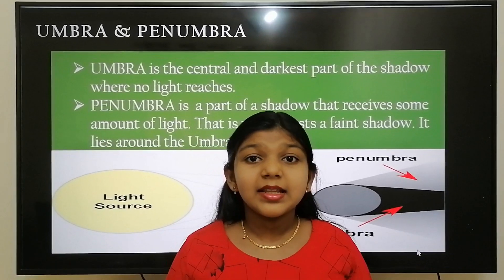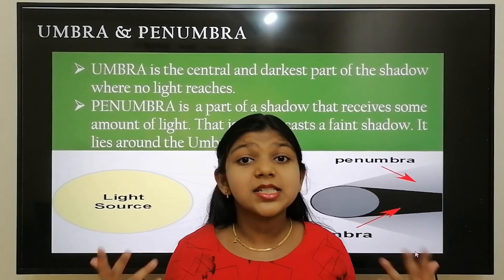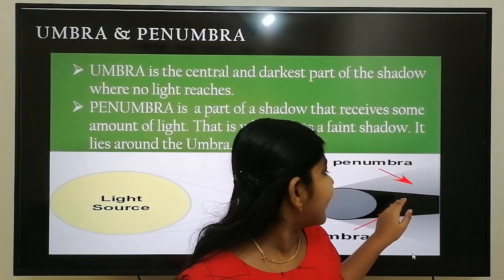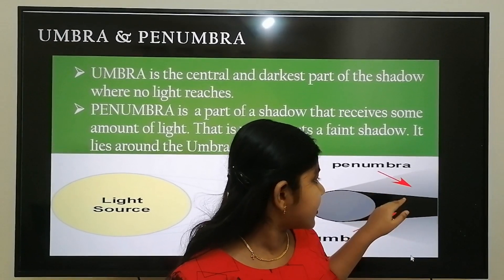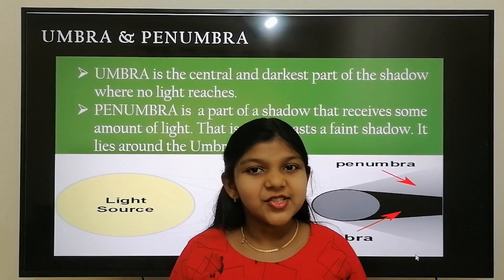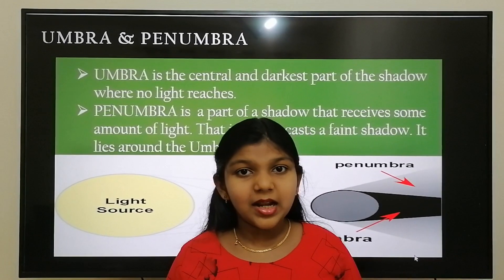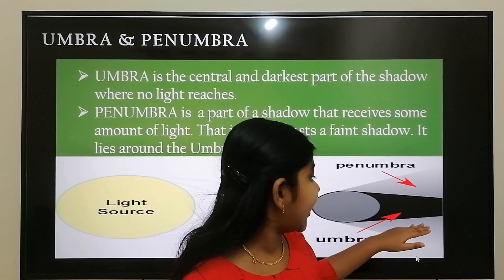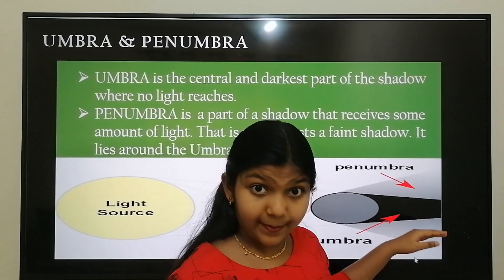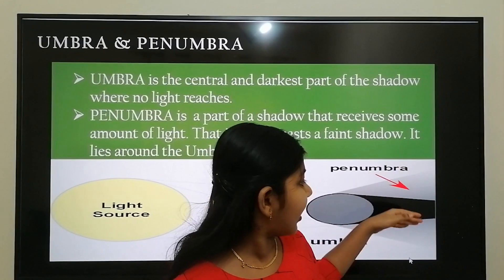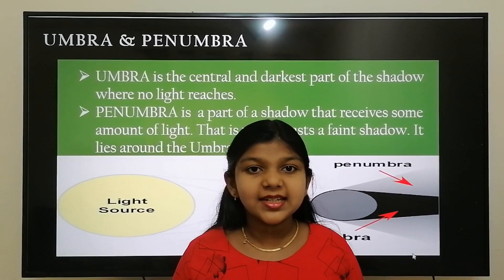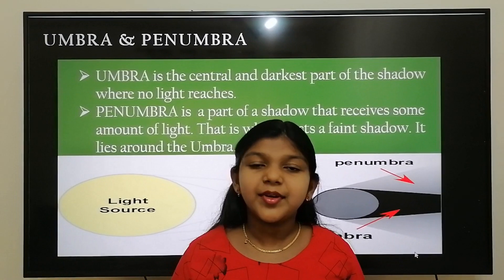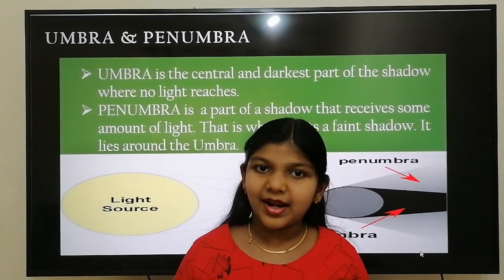The umbra is the central and darkest part of the shadow where no light reaches. The penumbra is a part of shadow which receives some amount of light — that is why it casts a faint shadow. The penumbra is around the umbra. If the object blocks the light completely, it casts a dark and sharp shadow, and in this situation only the umbra is formed.